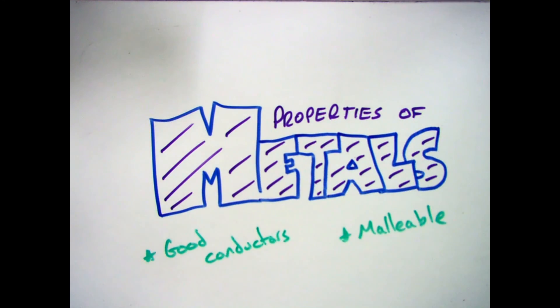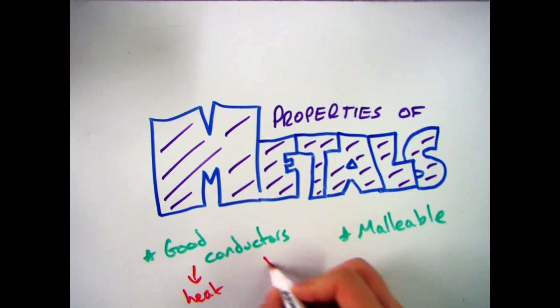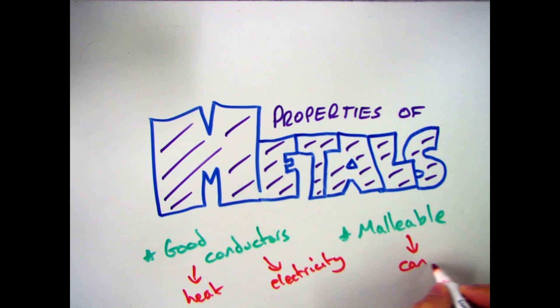The first two of which are that metals are malleable and they are good conductors, which means they are strong conductors of heat and strong conductors of electricity and malleable means they can be hammered into shape.